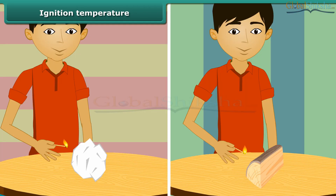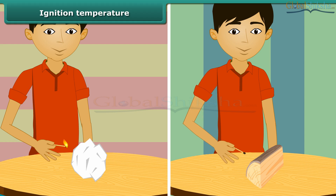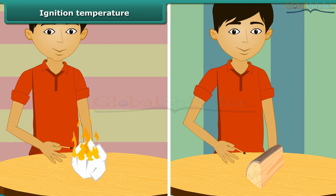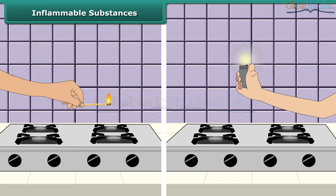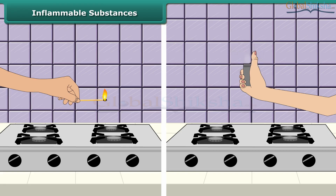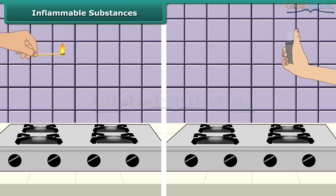A piece of paper burns when lighted with a matchstick. However, when you bring the matchstick close to a piece of wood, the wood does not catch fire. One lighted matchstick is not able to burn the piece of wood because the wood has not reached its ignition temperature. Ignition temperature is the lowest temperature at which a substance catches fire.